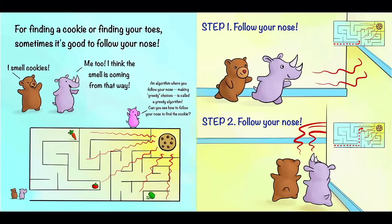To introduce our next kind of algorithm, we observe that for finding a cookie or finding your toes, sometimes it's good to follow your nose. Here Bear says, I smell cookies, and Rhino says, me too, I think the smell is coming from that way. Pig tells us an algorithm where you follow your nose, making greedy choices, is called a greedy algorithm. Can you follow your nose to find the cookie? And here we have a maze with a cookie here.